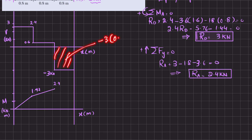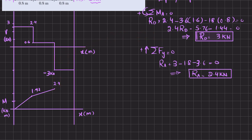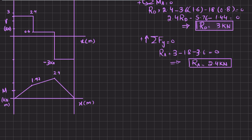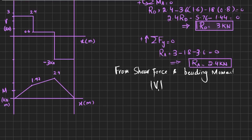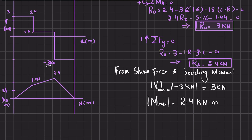The third area is −3 × 0.8 = −2.4, so 2.4 + (−2.4) = 0 at point D. Since the area is negative, the slope is decreasing, completing the bending moment diagram. From the shear force and bending moment diagrams, the absolute maximum shear force is 3 kilonewtons, and the maximum bending moment is 2.4 kilonewton-meters.